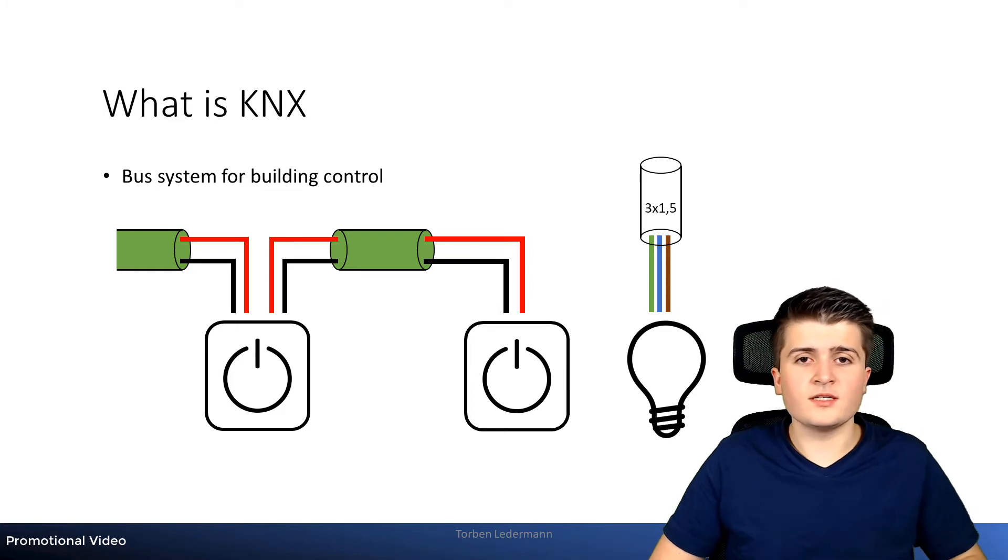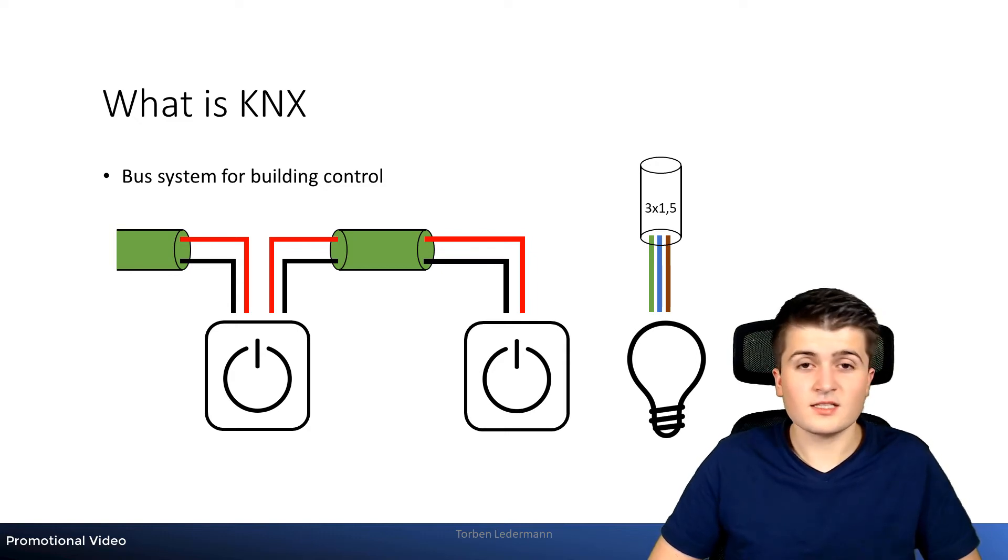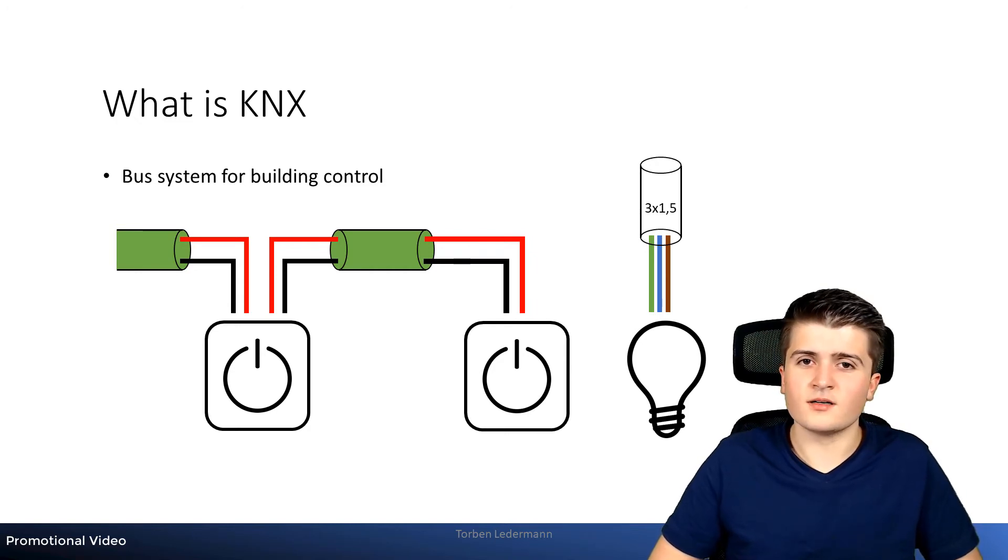And it receives the information when to switch the light on and off via the bus wire. So whenever a user presses the push button the sensor then sends a telegram onto the bus wire, which the actuator reacts to and turns the light on or off. Therefore central functions such as timers can now easily be implemented. The corresponding module only has to be connected to the bus wire and parametrized and is then capable of switching the light on and off.